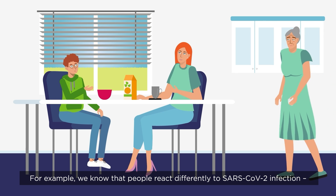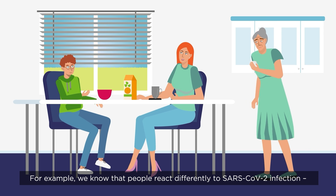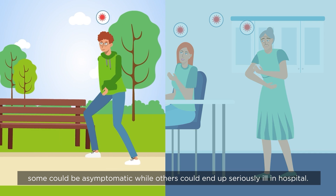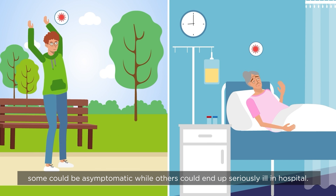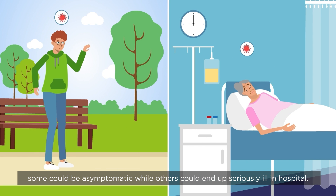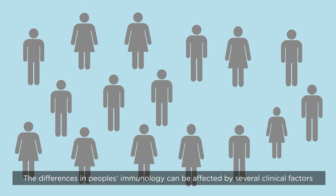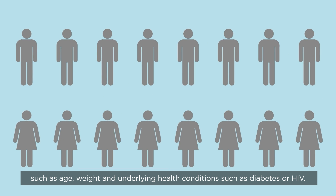For example, we know that people react differently to SARS-CoV-2 infection. Some could be asymptomatic, while others could end up seriously ill in hospital. The differences in people's immunology can be affected by several clinical factors, such as age, weight and underlying health conditions, such as diabetes or HIV.